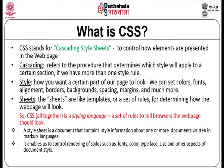CSS stands for cascading style sheets, which is actually a styling language which contains a set of rules to tell browsers how our web page is going to look like. There are three parts: cascading, style, and sheets. Cascading refers to the procedure of writing the rules which we want to apply to a certain section, and we have more than one style rule which can be applied to that section.